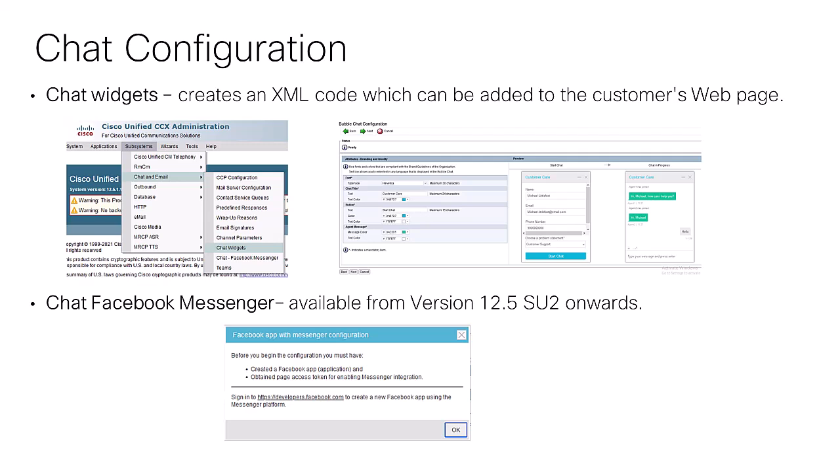When you create a chat CSQ, Cisco offers chat widgets with all the requirements you need, which generates an XML code to add to the backend code of your website. Additionally, it's possible to have a Facebook Messenger chat, which has been available since version 12.5. To enable it, you must have a Facebook application and an access token, which are created on the Facebook Developers webpage.